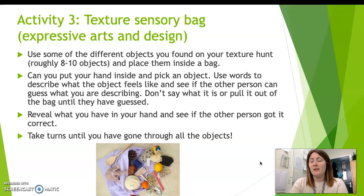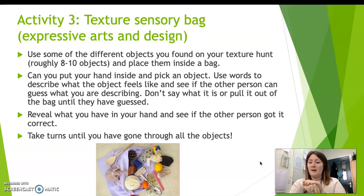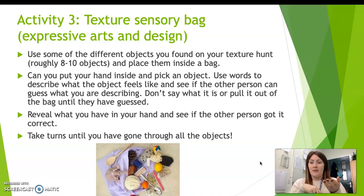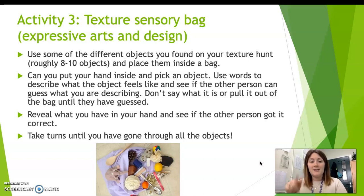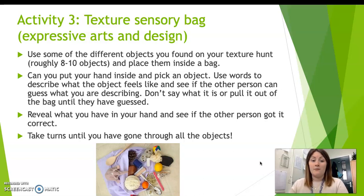Here's an example: if you've put a wooden spoon inside your bag, pop your hand inside, feel around, pick up the spoon, and say 'this object is very hard and it also feels quite smooth.' Then the other person can try and guess what you're talking about. If they get it right, brilliant. If they don't, they can try and guess again. Then take it in turns and go through all of the objects in the bag — somebody else can describe an object for you to guess. It's about learning different words to describe different textures and feelings.